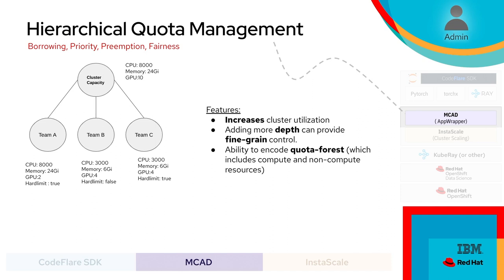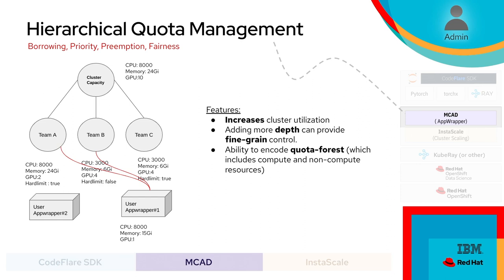This is all about sharing is caring. Hierarchical quota management allows you to share cluster resources when demand is low and provides fairness when demand is high. Consider a tree where the entire cluster is divided into three teams — A, B, and C. Team B is allowed to borrow resources. If a user inside team B submits a workload requiring more than team B's quota, it borrows from team A. When a user in team A later submits a workload within quota limits, team A's workloads get prioritized and team B's get preempted. We support multiple trees, also known as a quota forest, providing fine-grained control over any resources inside your OpenShift cluster.